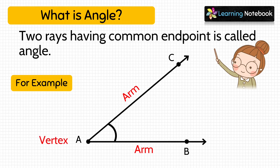So students, A is the vertex here, while AC and AB are the arms of the angle. Now let's learn how to name an angle.